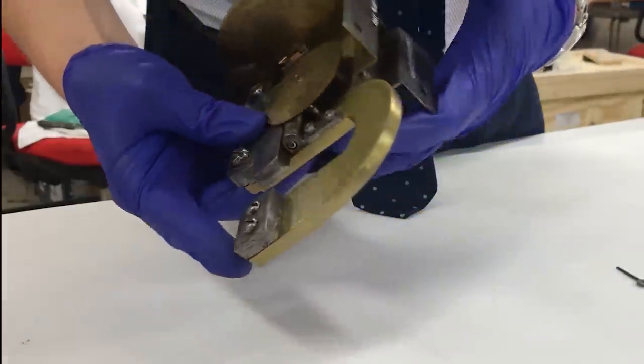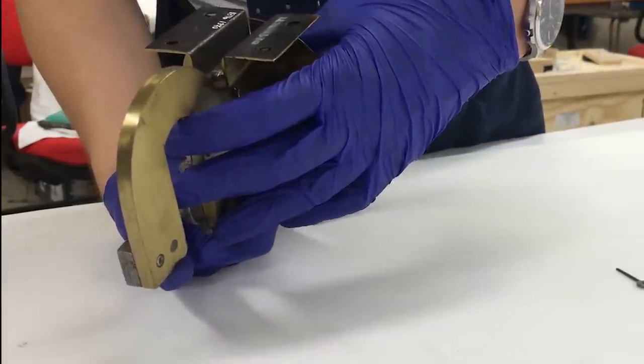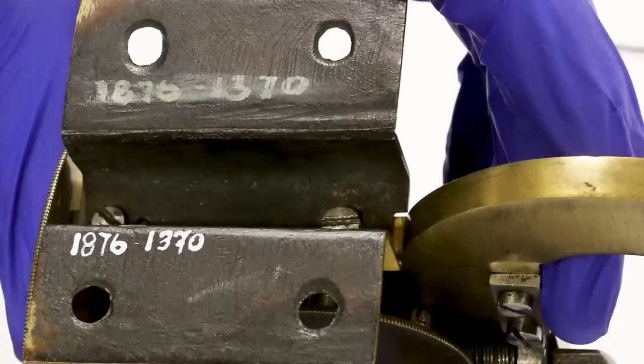Let's flip it over and look at the bottom. We can see the accession number, the year of the collection when the micrometer was added to the museum's collections, 1876, and the item number, 1370.